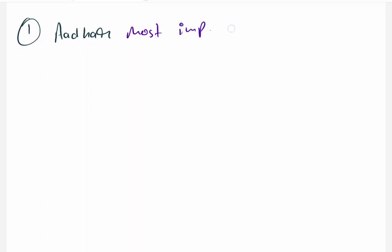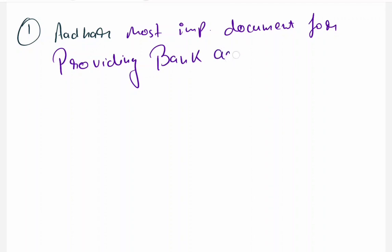The first suggestion was that Aadhaar should be made the most important document and should be made mandatory for providing bank accounts. Another suggestion: beginning from 2014, within a period of 12 months, 50% of the population aged 18 or above should be provided with a bank account.